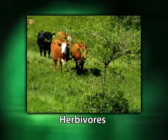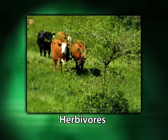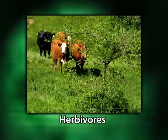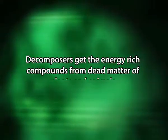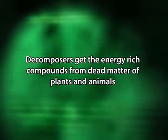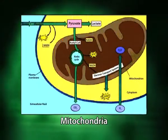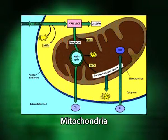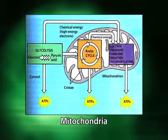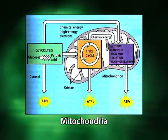Herbivores, in search of energy-rich compounds, feed on plants and break down the consumed food to release energy, while carnivores feed on herbivores to get this energy. Decomposers get the energy-rich compounds from the dead matter of plants and animals. In the eukaryotic world of plants and animals, the breakdown or oxidation of these energy-rich compounds is brought about sequentially in the cytoplasm and then in the mitochondrion, commonly referred to as the powerhouse of the cell, where almost all of the energy is harvested, resulting in the formation of ATP.